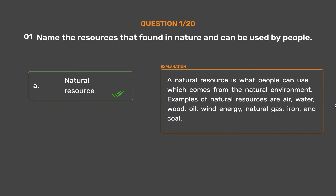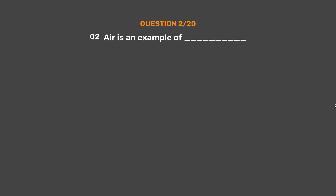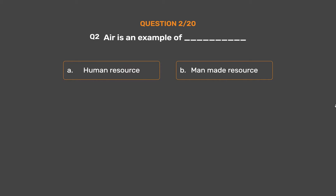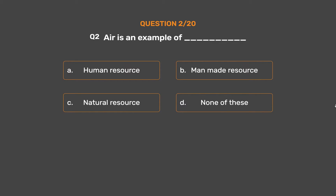Question number 2: Air is an example of _____. Option A: Human resource. Option B: Man-made resource. Option C: Natural resource. Option D: None of these.